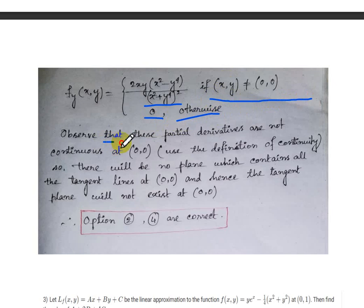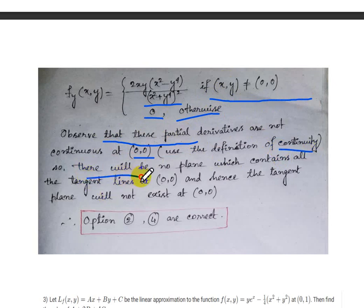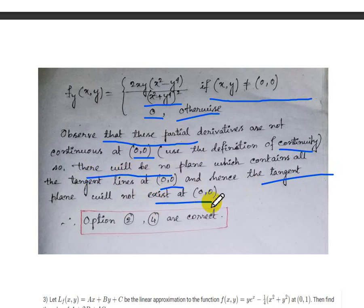We observe that these partial derivatives are not continuous at (0,0). Using the definition of continuity, there is no plane which contains all the tangent lines at (0,0), and hence the tangent plane does not exist at (0,0). Therefore options 2 and 4 are correct.